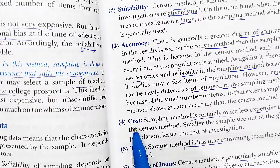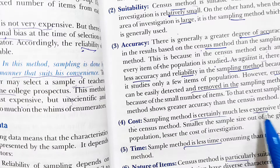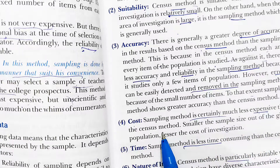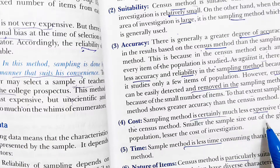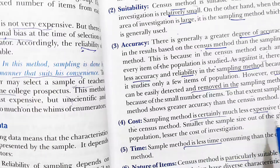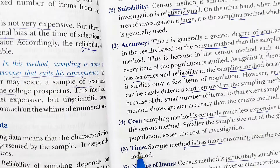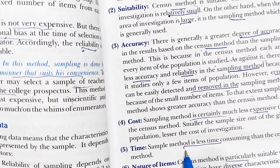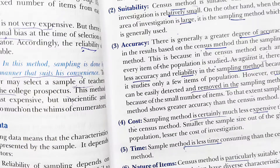The next point is cost. The sampling method is less expensive than the census method because only some items are taken from the population for investigation, so the cost of investigation is less. Regarding time, the sampling method is less time-consuming, whereas the census method takes a lot of time to collect the data.